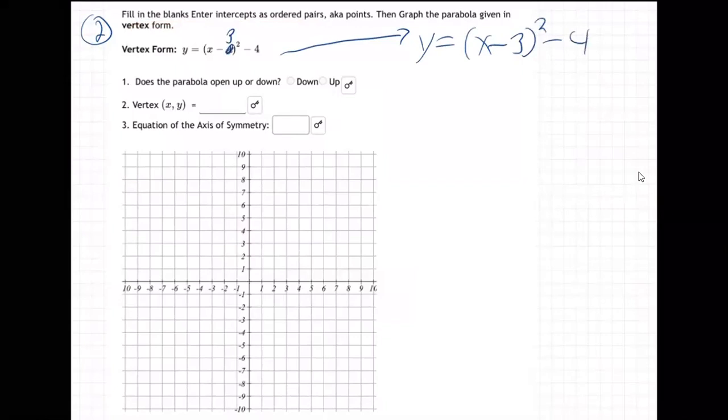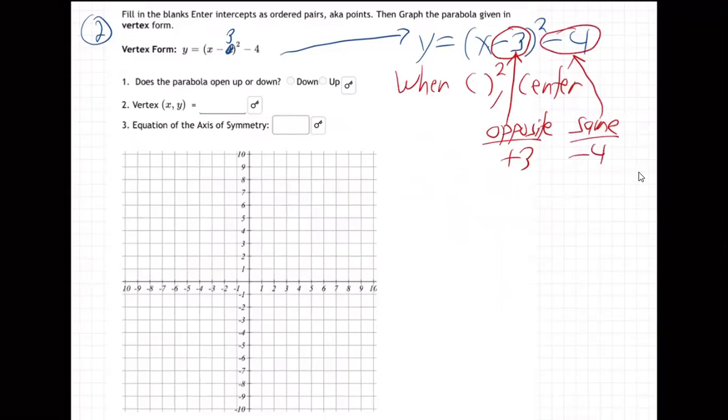They are giving us parentheses. The form has parentheses, this is good news, these are easier. When you've got parentheses squared, you can find the center like this: you go opposite of that number in the parentheses, which would be plus three, and same as this number outside the parentheses. So three, negative four is the center. Boom, no x equals negative b over 2a, just boom boom, opposite same, you're done.